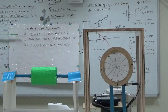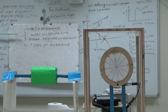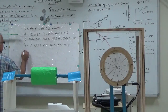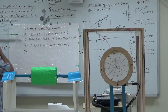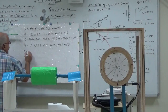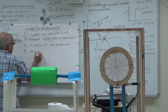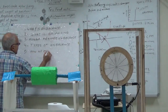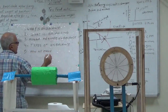So our topics of discussion today are: number one, what is unbalance? Number two, what is balancing? Number three, how will we layer unbalance? Number four, types of unbalance. Number five, how will we make balancing?